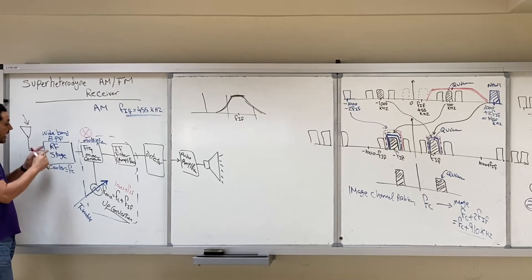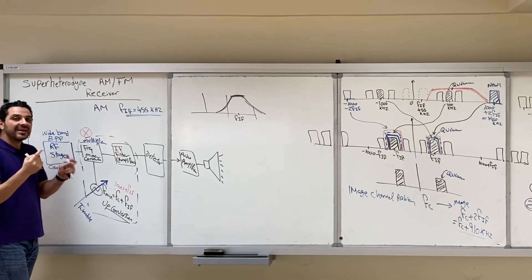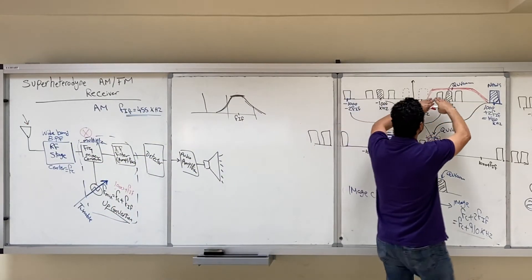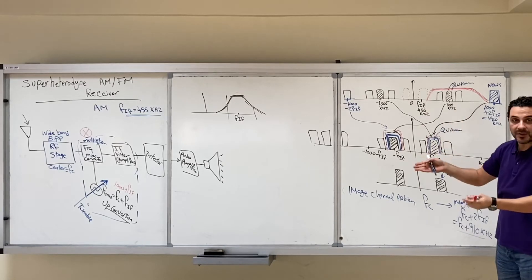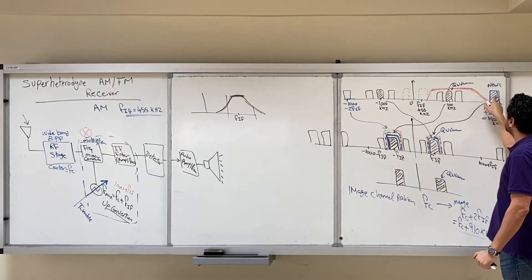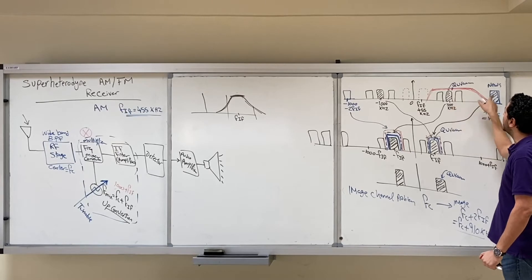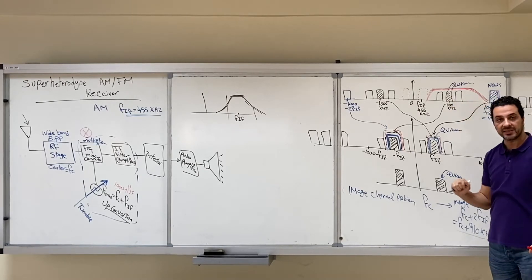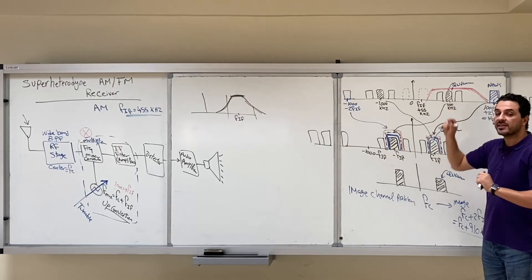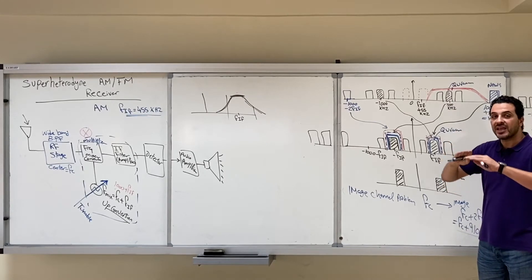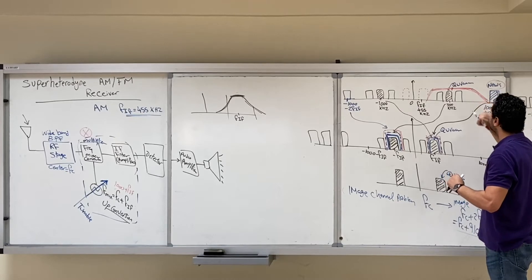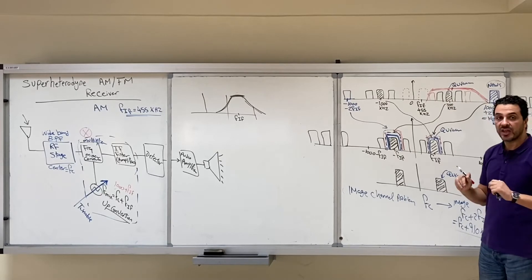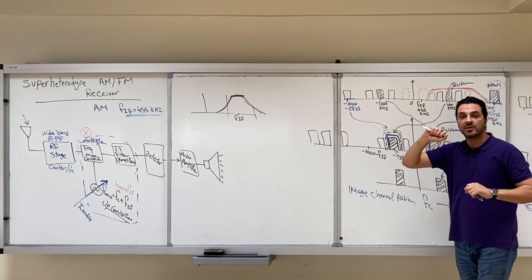This filter is tunable and designed at high frequency. But the reason it is not difficult to design is that it is a wide-band filter — wide enough to be easy to design. At the same time, it guarantees that the image of the channel you want to listen to will not pass. Yes, it is at high frequency and it is tunable, but it is easy to design because it has a wide bandwidth. The wide bandwidth ensures the image channel will not pass, though other channels may still pass through.